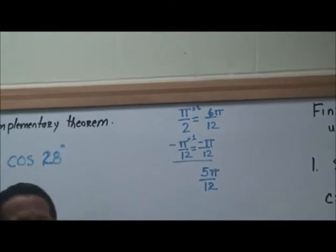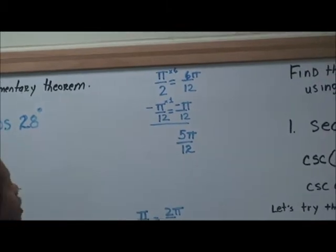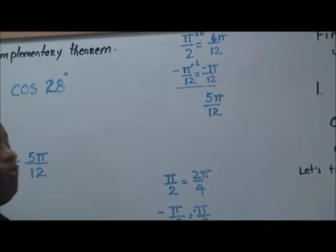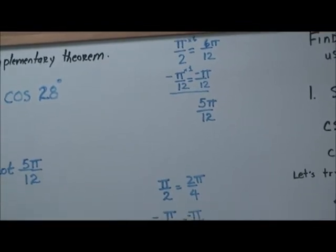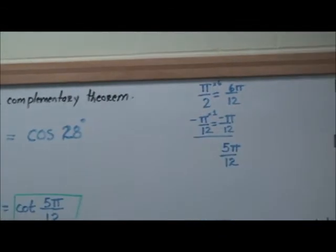We got our common denominator, so all we have to do is subtract. So 6π minus π will be 5π over 12. This is how we got this solution here. We see that.